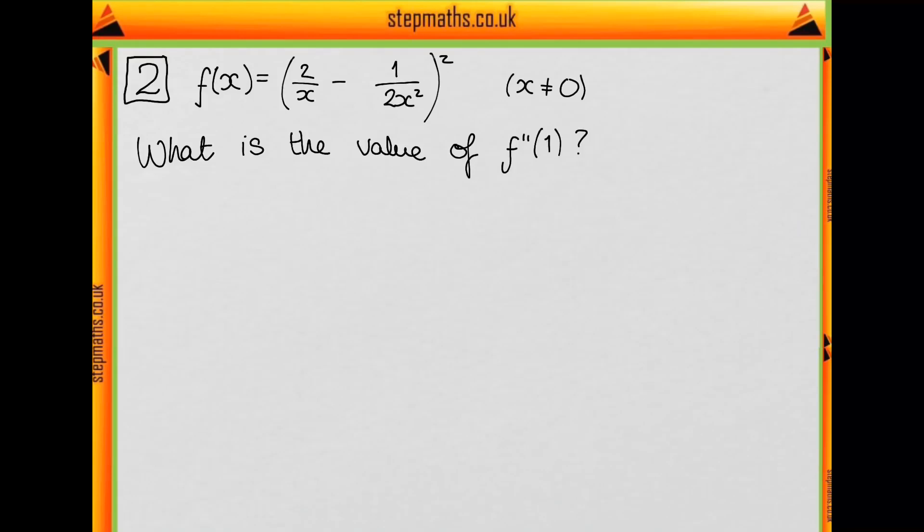This is question 2 and we're told that f of x is equal to 2 over x minus 1 over 2x squared, all squared.